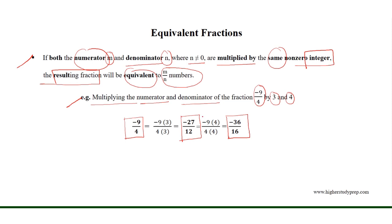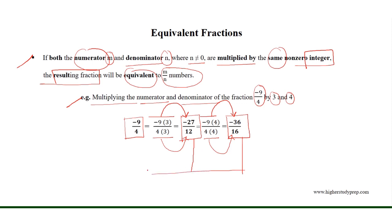Because minus 9 times 4 equals minus 36, where 4 times 4 equals 16, and minus 9 times 3 equals minus 27, where 4 times 3 equals 12. Thus, minus 36 over 16 and minus 27 over 12 are equivalent fractions of minus 9 over 4.